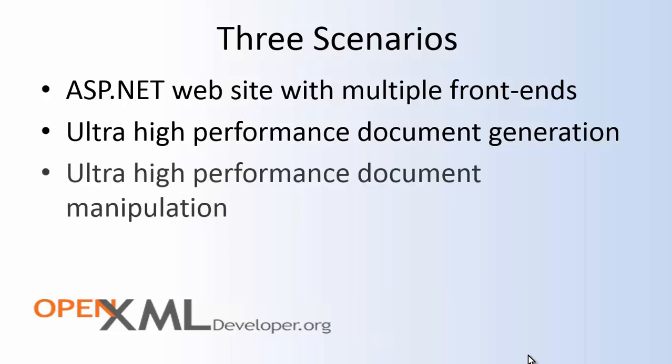There's also a third scenario: ultra high-performance document manipulation. You might have a document crawler or search engine crawler that goes through tens of thousands of documents on a network share, doing searches or operations such as accepting tracked revisions in those documents. Everything works fine until memory usage happens to go above 10 megabytes.